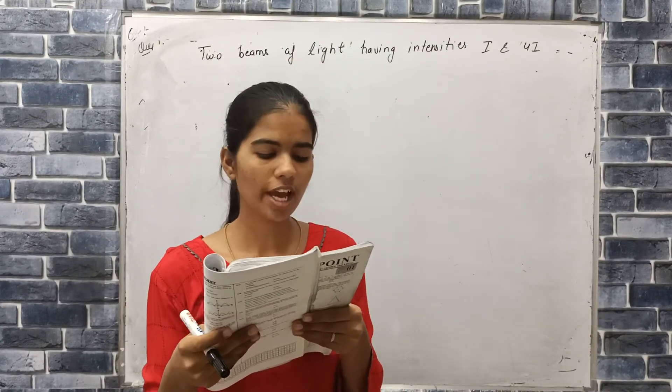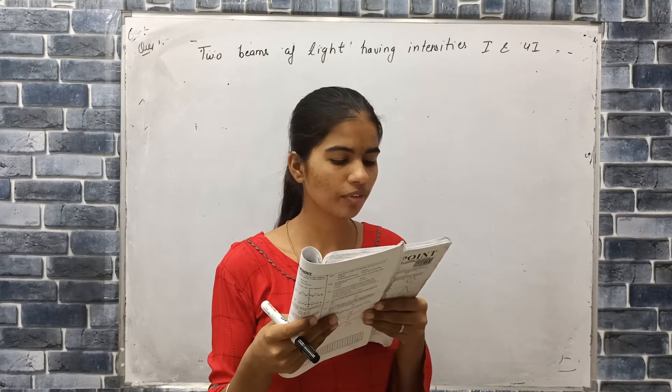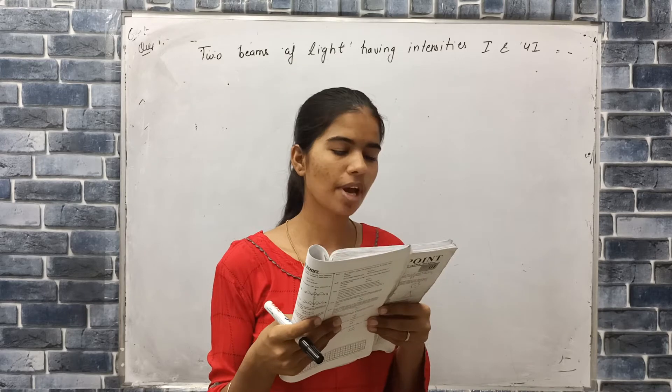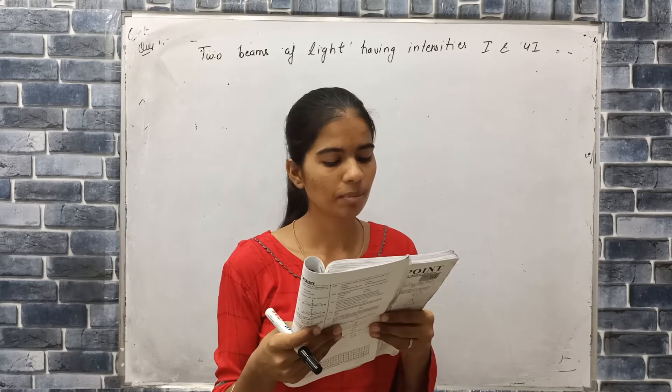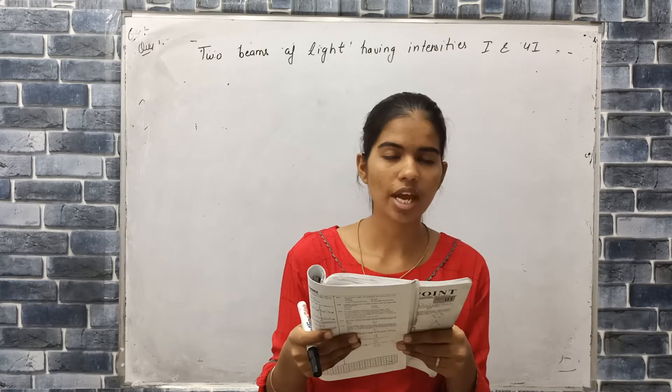Question is, two beams of light having intensity I and 4I interfere to produce a fringe pattern on a screen. The phase difference between the beams is π by 2 at point A and π at point B. Then find the difference between the resultant intensity at A and B.